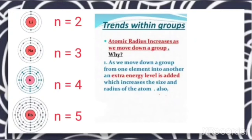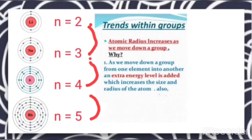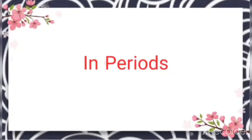When asked why the atomic radius increases from top to bottom in a group, the reason is that an extra energy level is added. In lithium there are two energy levels; moving to the next element, one more energy level is added, making it three, then four, then five. Because of this extra energy level being added from one element to another, the atomic size increases.